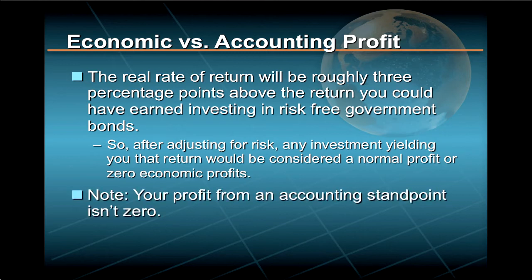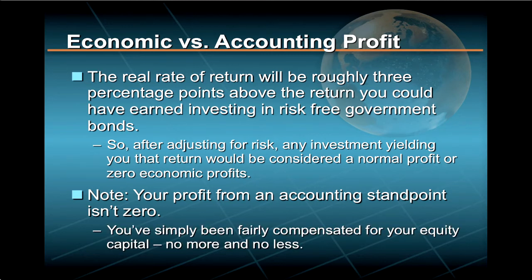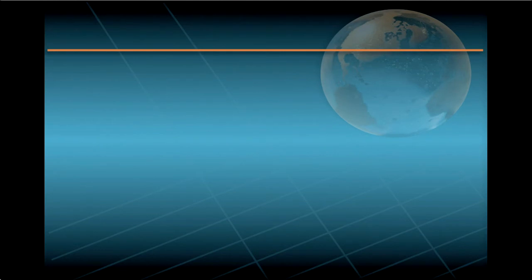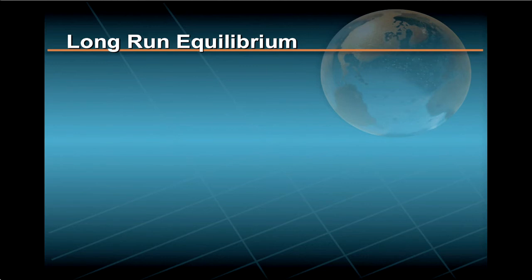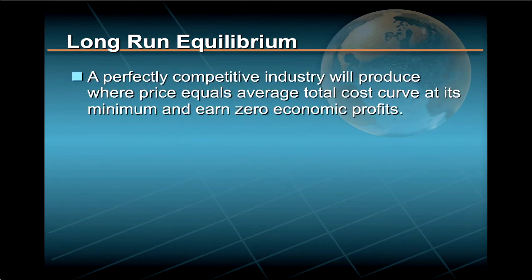Note that your profit from an accounting standpoint isn't zero at all — you've simply been fairly compensated for your equity capital, no more and no less. With that said, let's go back to our long-run equilibrium condition. In the long run, a perfectly competitive industry will produce where price equals average total cost at its minimum and earn zero economic profits.